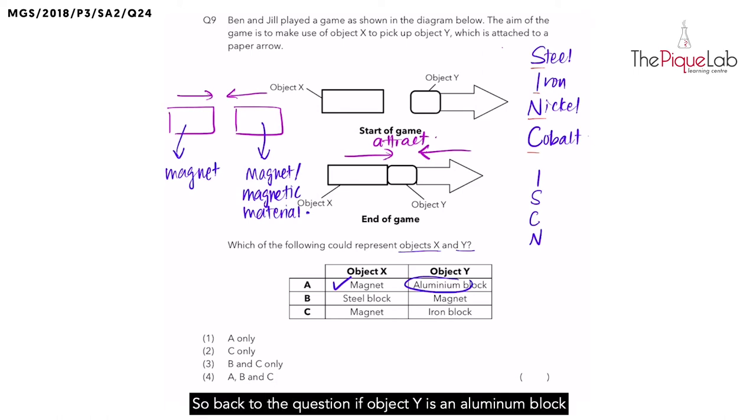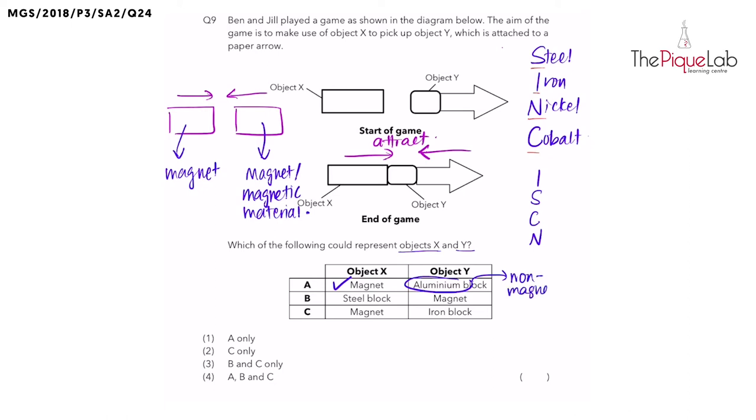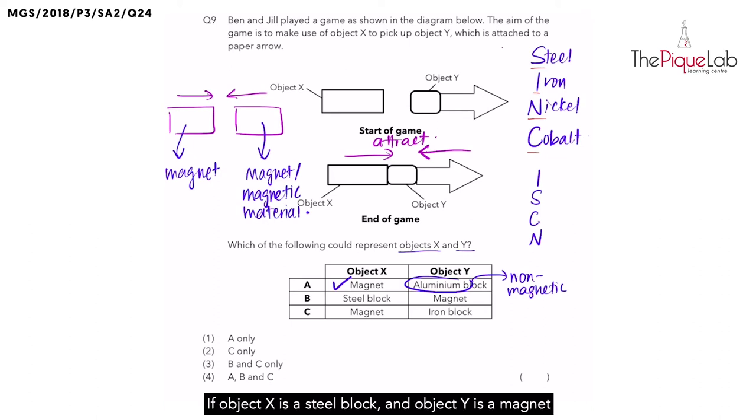So back to the question. If object Y is an aluminum block, would this setup work? No. Why no? Because aluminum is non-magnetic. Now, let's look at option B. If object X is a steel block and object Y is a magnet, would this setup work?